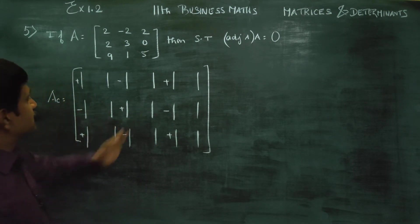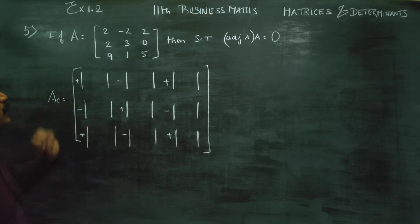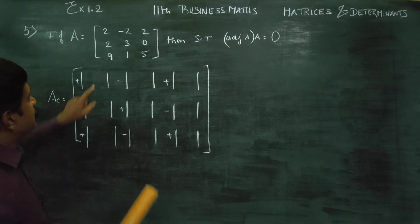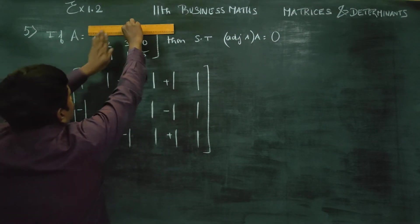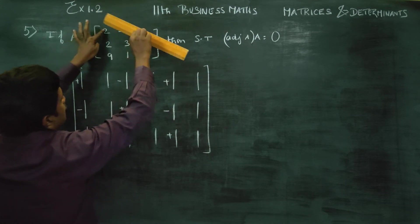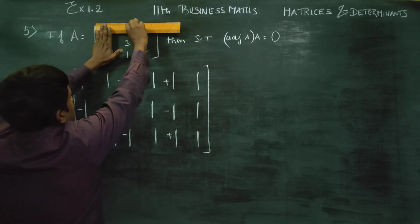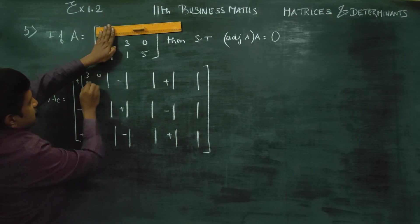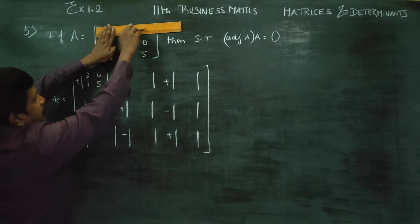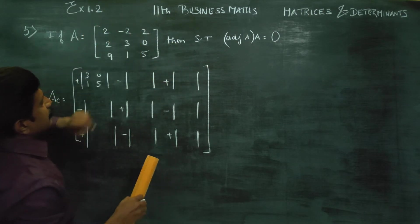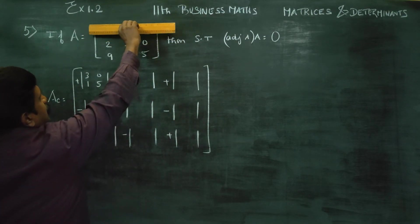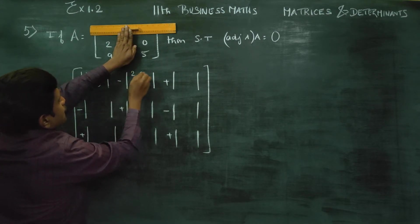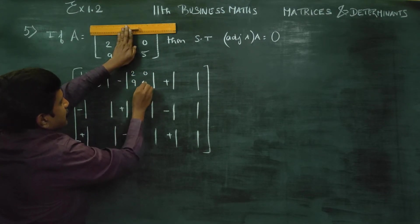Now we enter the terms. For the first element, find the minor by closing the row and column. Close the first row and first column to get the 2×2 submatrix with elements 3, 0, 1, 5. For the second element, close the second row and second column to get 2, 0, 9, 5.